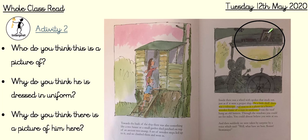Why do you think this picture would be there, and why is there a man in uniform? So who do you think it is, and why do you think he is dressed in uniform? We're doing a little bit of prediction work. The answers aren't clear to us, so there's no right or wrong answer — we're just using the clues from the text to help us.